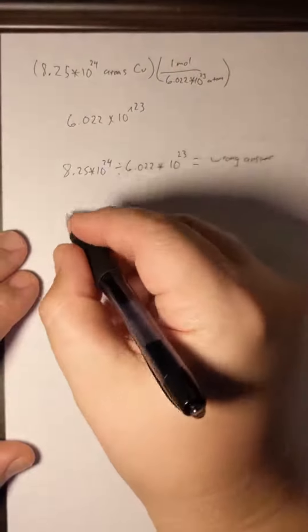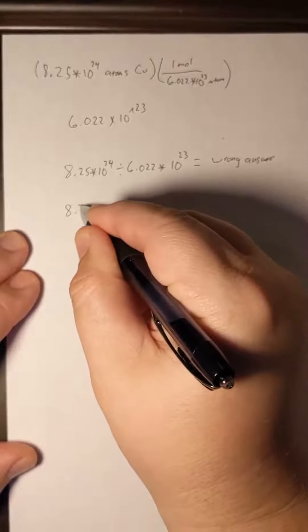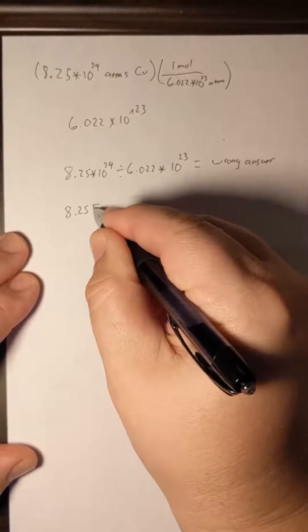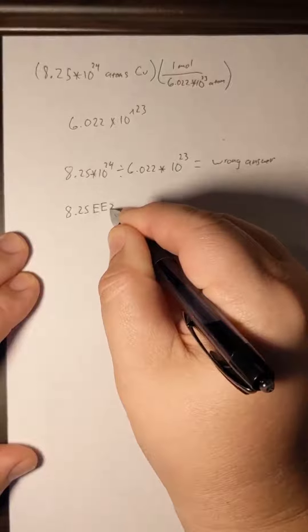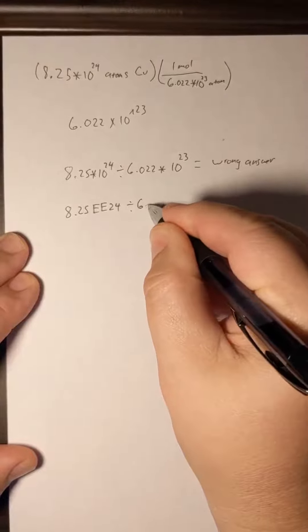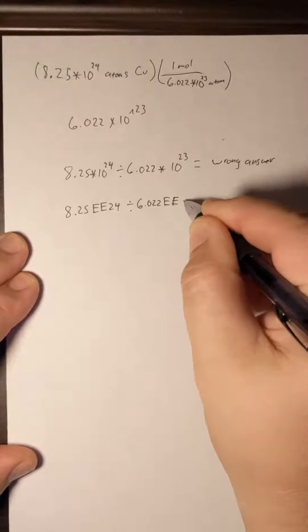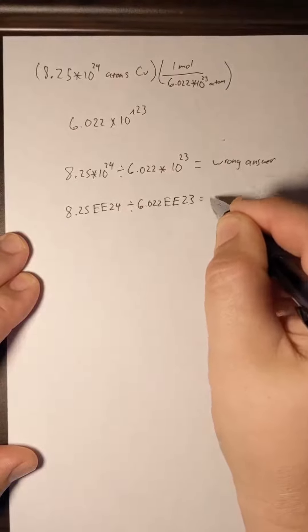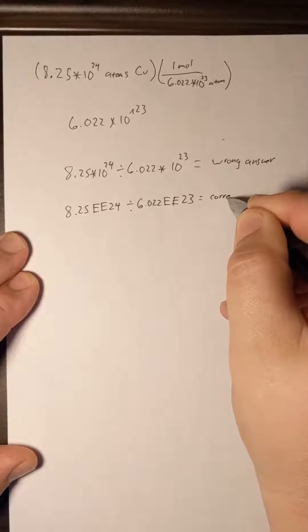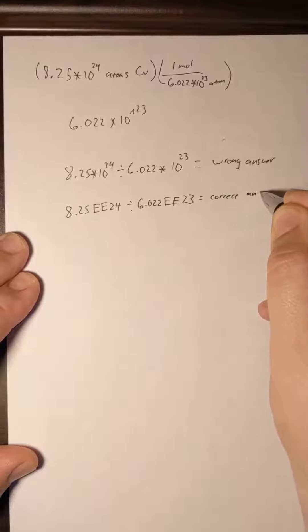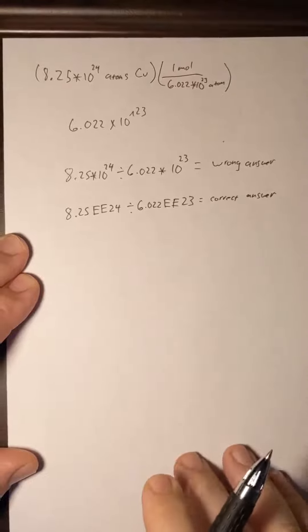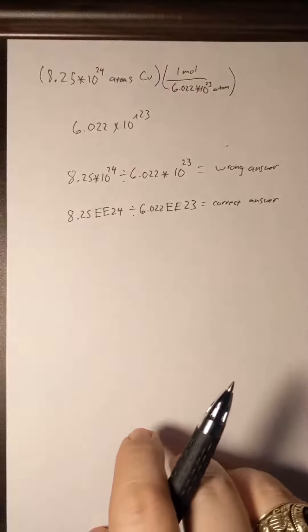Instead type it in this way. If you use the double E button, that tells it to put it in scientific notation. And this is going to ensure that we don't run into a logic error with our calculator.